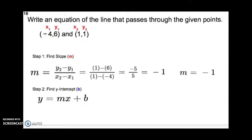Now, step 2 is to find the y-intercept or b. So, what we need to do is substitute this slope, and either 1, 1, or negative 4, 6, in for x and y, to find b. I'm going to use 1, 1, just because they're easier numbers to work with.